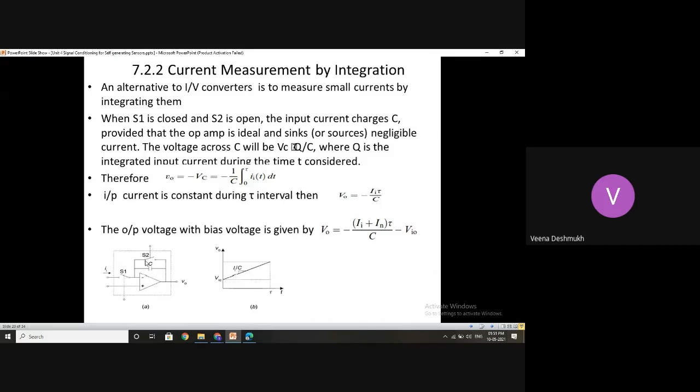You can see here, there is a circuit with a simple capacitance connected of proper value and two switches are used. When S1 is closed and S2 is open, whatever current is coming here, you know it cannot enter this device, so it comes to this capacitor end, assuming the op-amp is ideal.